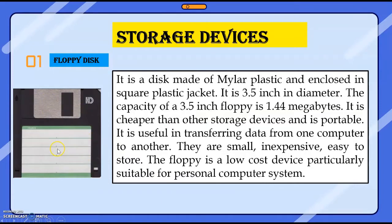The floppy disk is 3.5 inches in diameter. The capacity of this floppy disk is 1.44 megabytes, which is less capacity. In olden times, when we were in college, we used to store data with the help of this floppy disk only. It is cheaper than other storage devices and it is portable also. It is useful in transferring data from one computer to another computer.